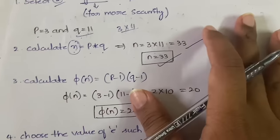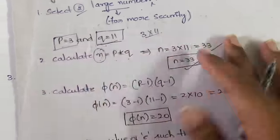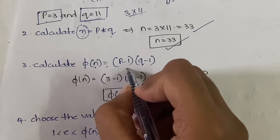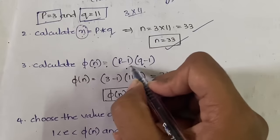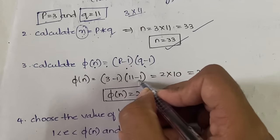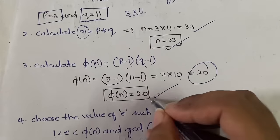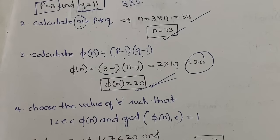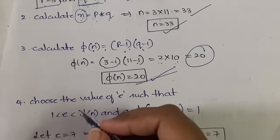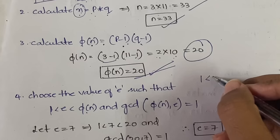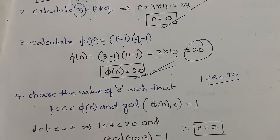So n = 33. In the third step, calculate φ(n), which equals (p − 1)(q − 1). Here, instead of p × q directly, you do p − 1 times q − 1. So (3 − 1)(11 − 1) = 2 × 10 = 20. Therefore φ(n) = 20. Next, in step four, you need to choose a value for e, where e stands for encryption. The value of e must be between 1 and φ(n), so for our example, 1 < e < 20.